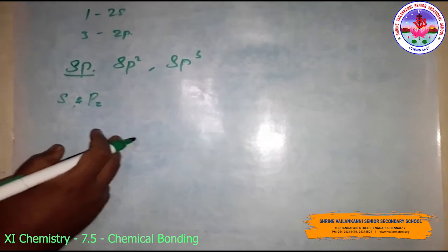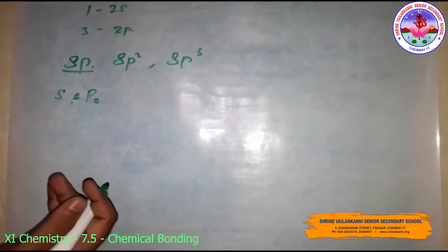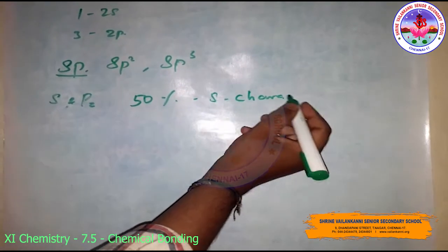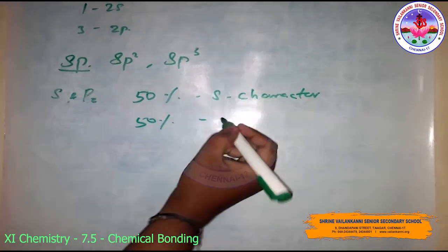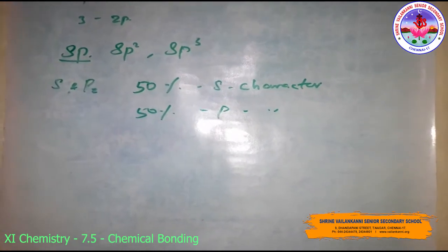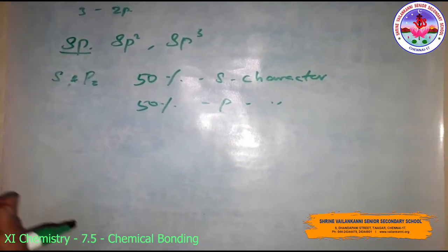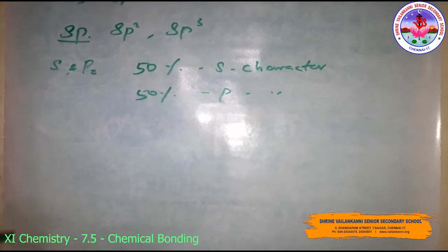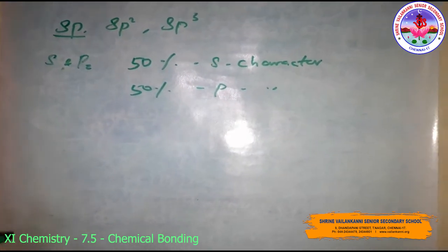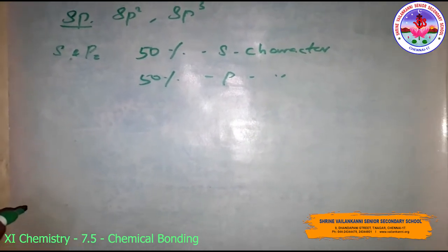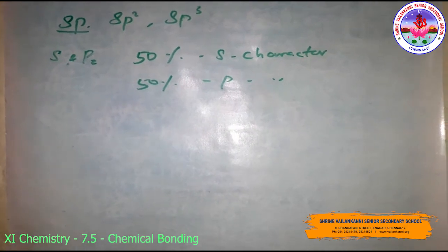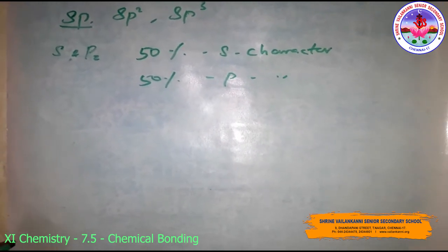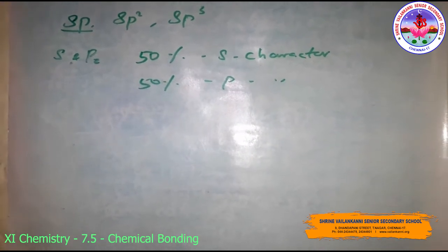Each sp hybrid orbital has 50% s character and 50% p character. Molecules in which the central atom is sp hybridized are linked directly to two other atoms, forcing a linear geometry. This hybridization is also called diagonal hybridization. The two sp hybrid orbitals point in opposite directions along the z-axis, providing more effective overlapping and forming stronger bonds.